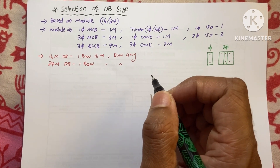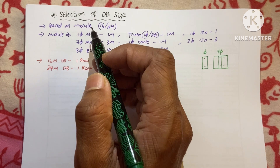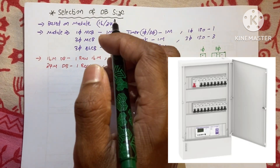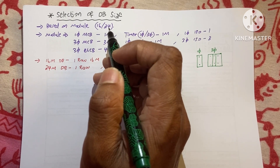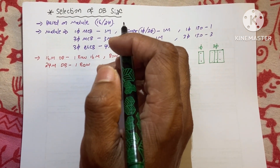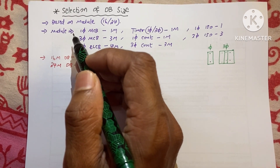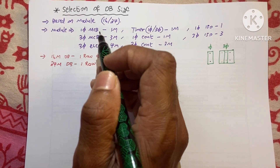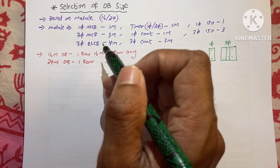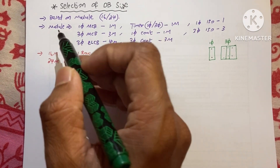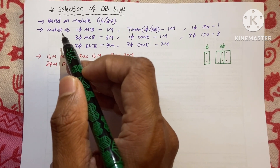Our topic is selection of DB size based on modules. 16-module and 24-module DB sizes are available. A module simply refers to an MCB or ELCB — whatever electrical device we place inside a distribution board is referred to as a module.